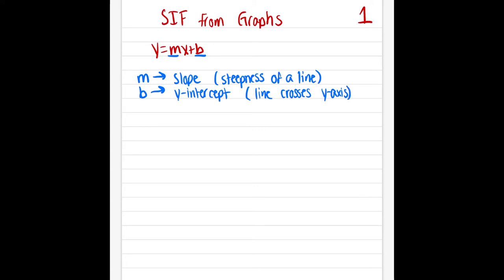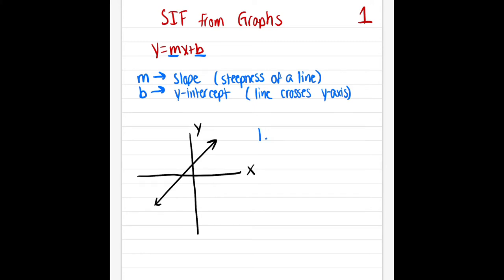So today what we're going to do is we are going to have a graph of a line where we have our X and our Y-axis. We're going to find our Y equals MX plus B equation by doing a few steps. I have four specific steps. Step number one is to mark two points on the line — we'll mark this point and this point. This is just a sketch, not our actual exact problem.